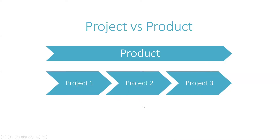Before diving deeper into Agile, I wanted to expand on the difference between project and product, because sometimes people don't really see a difference between them, which is quite crucial to understand. Agile methodology increasingly focuses on delivering products. Agile actually also does projects. So what's the difference between a product and a project?